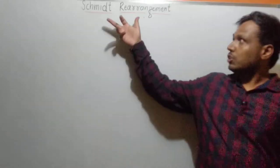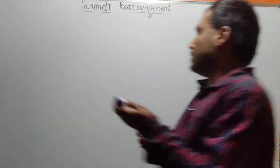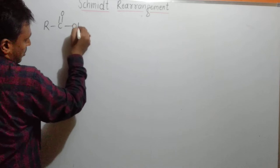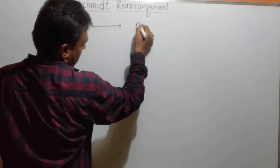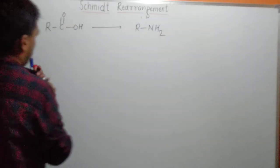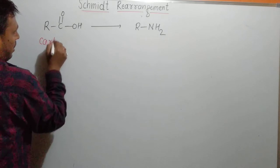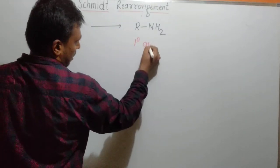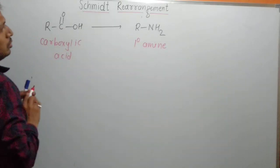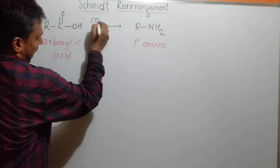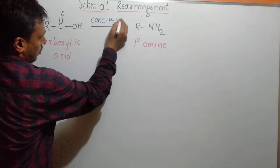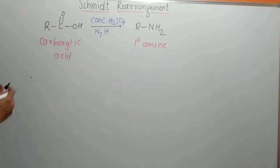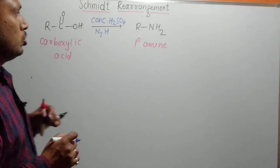Hello students, today we'll see the Schmidt Rearrangement. What happens exactly in Schmidt Rearrangement: we have a carboxylic acid, that is R-C(=O)-OH, and it changes into a primary amine, represented as R-NH₂. So in Schmidt Rearrangement, carboxylic acid changes into primary amine. The reagents for this conversion are concentrated H₂SO₄ and hydrazoic acid, that is HN₃.